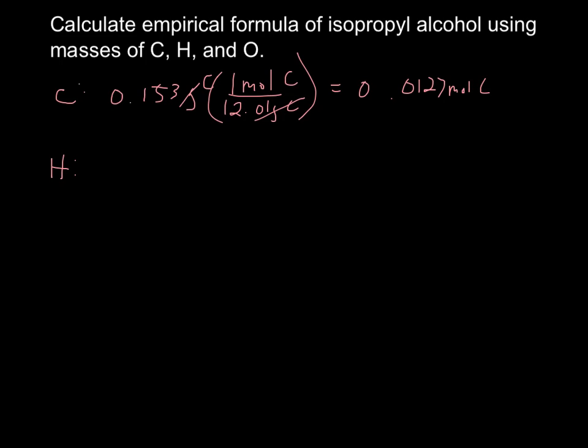Now for hydrogen, do the same thing. This is the same thing that we've done with just finding the regular empirical formulas of a substance. Except now we don't have to assume a 100-gram sample, because we have the exact grams here, the exact masses of these substances. So now I divide by the molar mass of hydrogen, and I get 0.0339 moles of hydrogen.